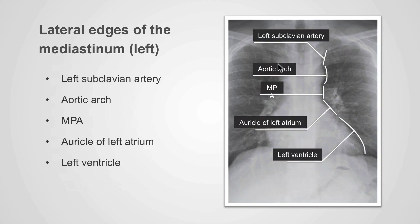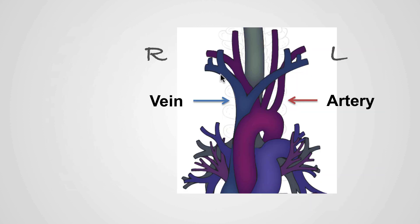The lateral edges of the mediastinum on the left are formed by the left subclavian artery superiorly, the aortic arch, the main pulmonary artery, the auricle of the left atrium, and the left ventricle. It is important to note that within the superior mediastinum, the lateral border is formed by the superior vena cava on the right, a vein, and on the left it is formed by the subclavian artery.